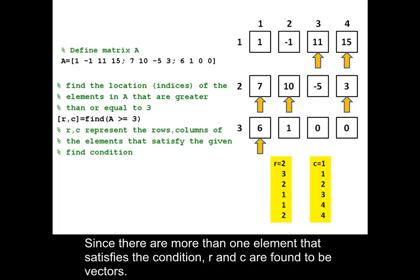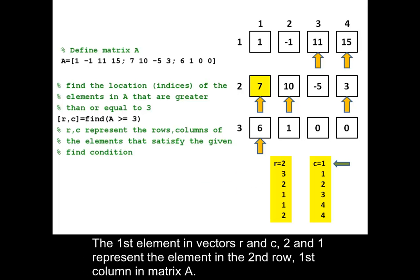Since there are more than one element that satisfies the condition, R and C are found to be vectors. The first element in vectors R and C, 2 and 1, represent the element in the second row, first column in matrix A.